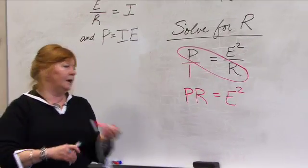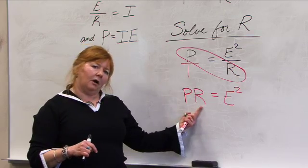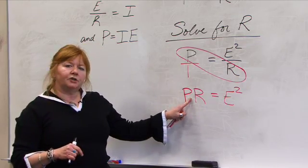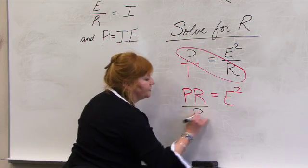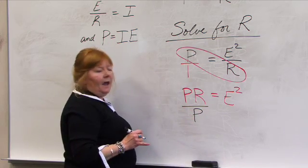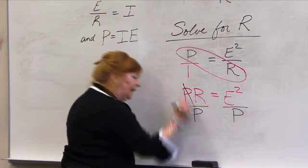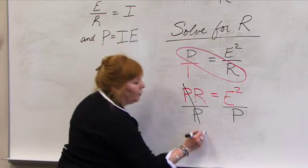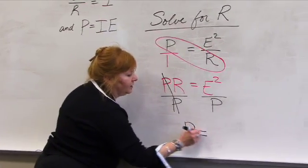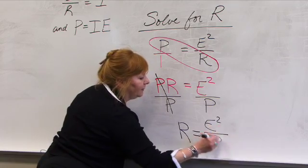But this time, we're solving for R, not P times R. The opposite operation is to divide by what I want to move over to the other side. I don't want that P there. And what I do to one side, I have to do to the other to keep this equal. It cancels from this side and shifts the relationship over. So I have R is equal to E squared divided by P.